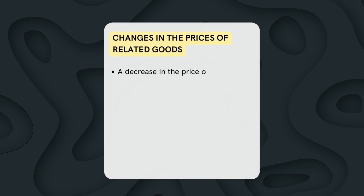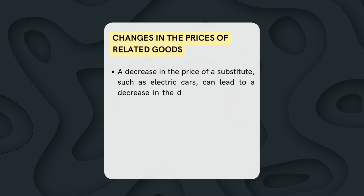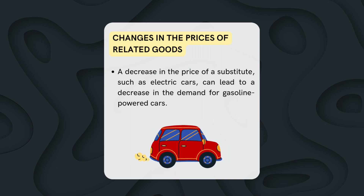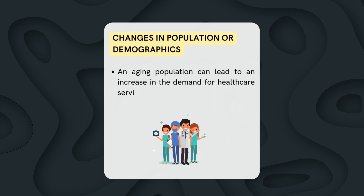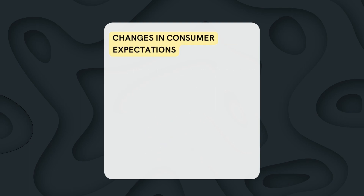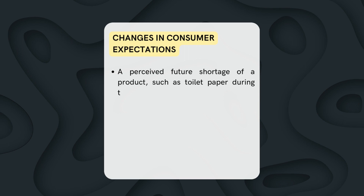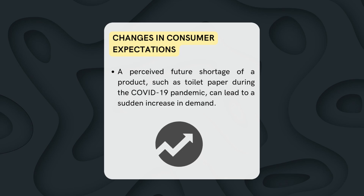Changes in the prices of related goods: a decrease in the price of a substitute, such as electric cars, can lead to a decrease in the demand for gasoline-powered cars. Changes in population or demographics: an aging population can lead to an increase in the demand for healthcare services. Changes in consumer expectations: a perceived future shortage of a product, such as toilet paper during the COVID-19 pandemic, can lead to a sudden increase in demand.